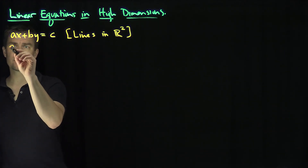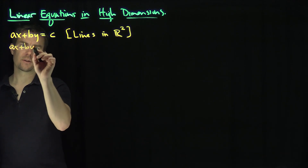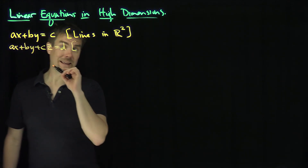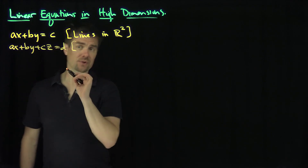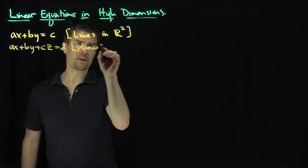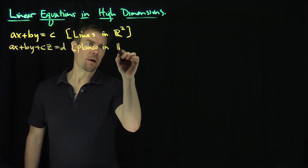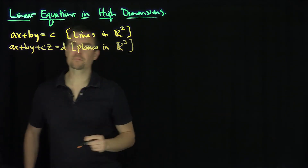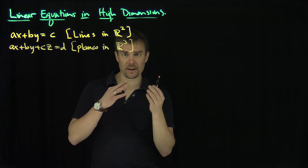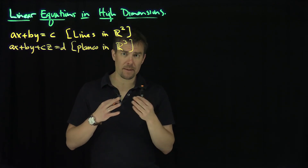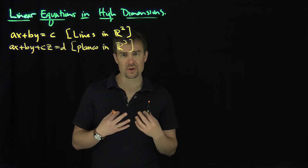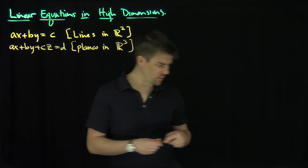Then in multivariable calculus we go to these equations — these are linear equations, and these are planes. These are the equations of planes that we learn about in multivariable calculus. These planes reside in three-dimensional space. But that's where our intuitive geometric ideas start to fail beyond three-dimensional space. We can still algebraically define what a linear equation is in n-dimensional space.